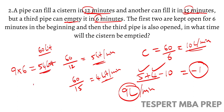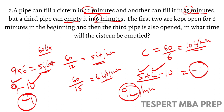After 6 minutes, pipe C joins. With all three working simultaneously: 9 − 10 = −1 liter per minute, meaning 1 liter is drained per minute. So the 54 liters of water that were filled will be drained at 1 liter/min, taking 54 minutes. The cistern will be emptied in 54 minutes.